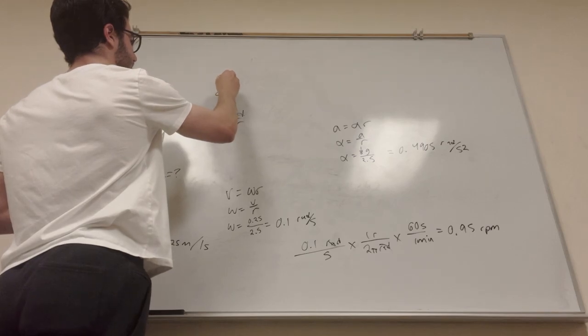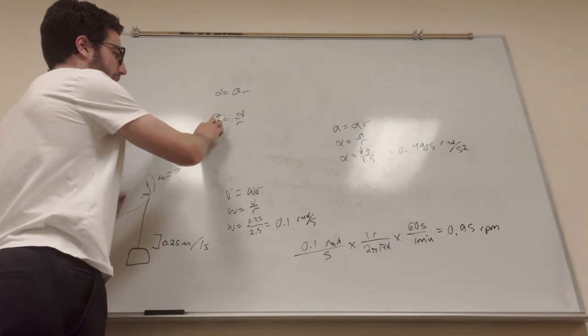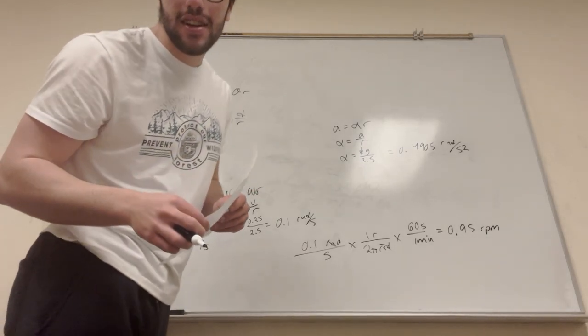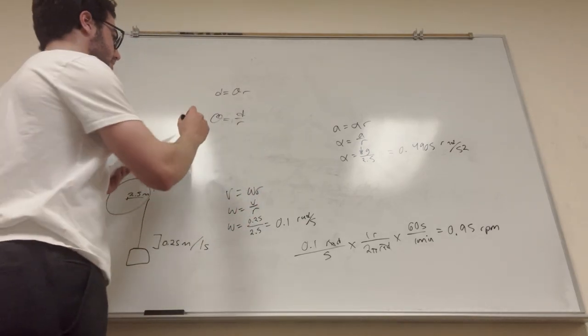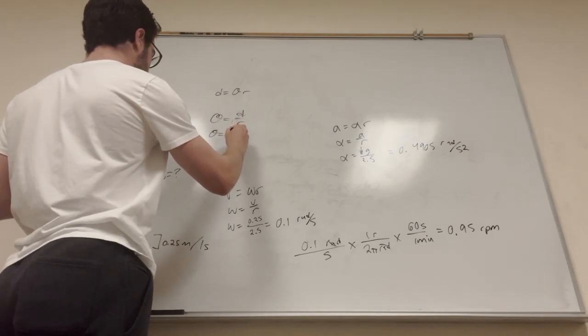Because distance is equal to theta times radius. Okay. So we're trying to find how much that angular displacement is, right? Yes, we are. Okay. So theta is equal to, it goes 3.25, and the radius is 2.5.